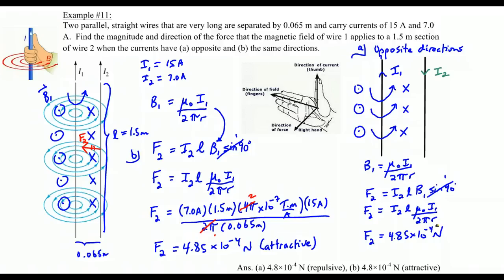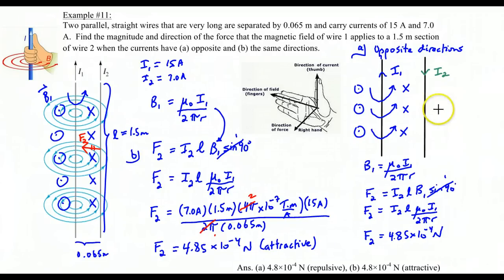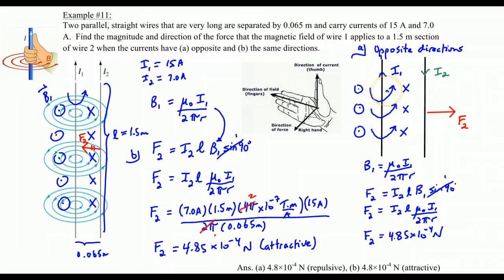However the direction will be different. On the right side we still have field going into the page, but now our thumb points downward instead of upward. Drop your pencil: put your fingers into the page and orient your thumb pointing down — your palm will face to the right. So there is a force to the right on wire 2. By the same argument, the force on wire 1 would be equal and opposite, going to the left. So these two forces are repulsive.